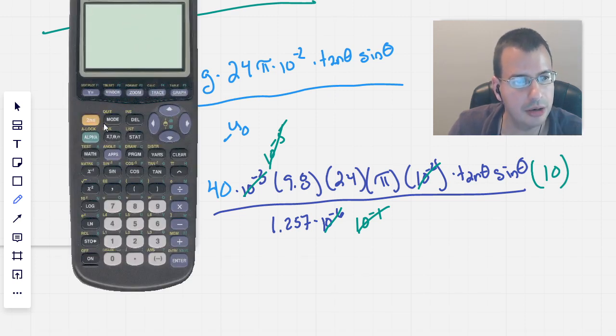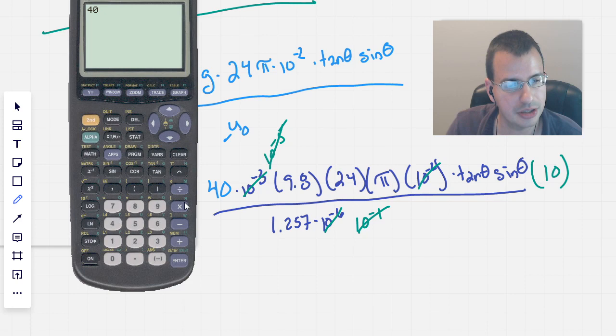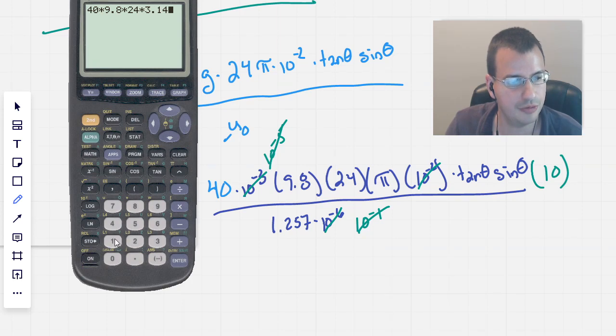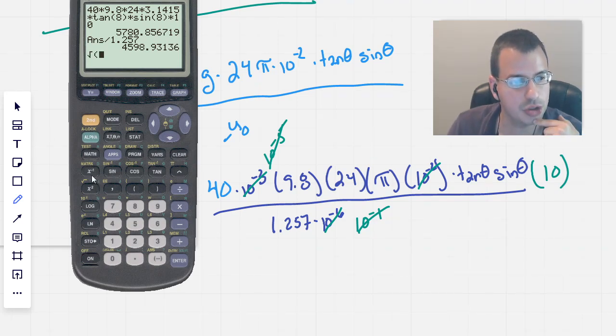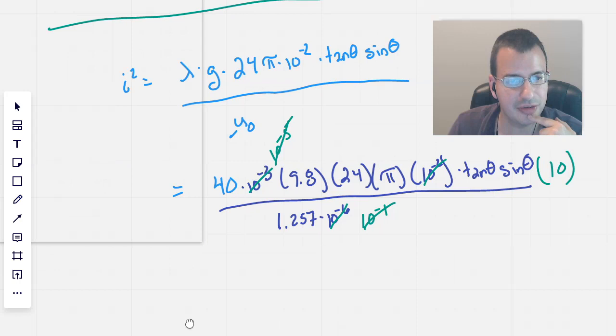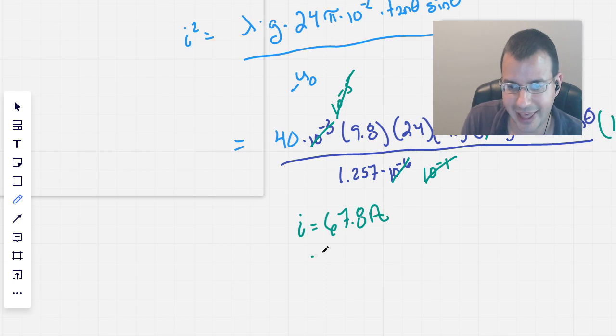So now we'll do calculator. Make sure we're in degrees. So I can quit. Do 40 times 9.8 times 24 times pi, which is 3.1415 times tangent of 8 times sine of 8 times 10 divided by 1.257. And that gives us 4598. But that's I squared. So we'll square root this. And we get 67.8. I equals 67.8 amps.